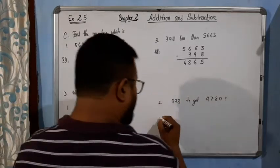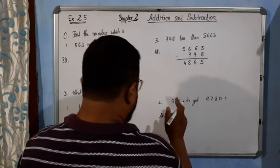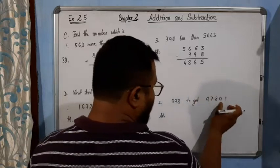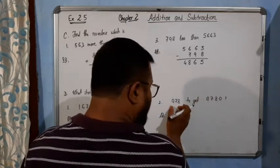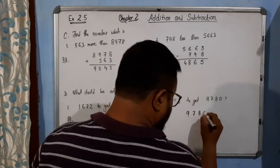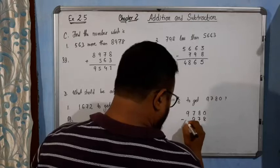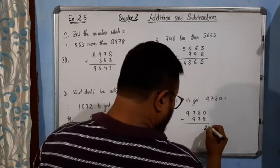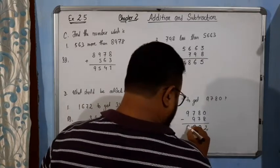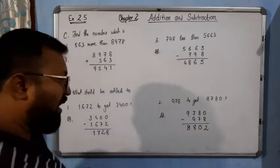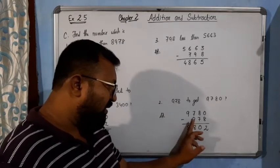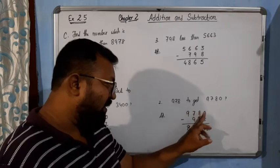Now come to question 2. Same thing here. What should be added to 978 so that it becomes 9780? Simply we subtract 978 from 9780 to get the required value. 9780 minus 978. 10 minus 8 gives 2. It becomes 7. 17 minus 9 gives 8, and 8. So the required number is 8802. If we add 8802 with 978, we get 9780.